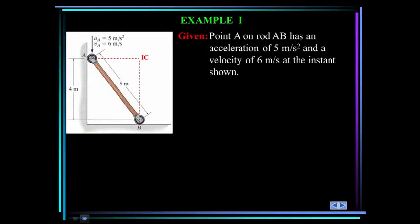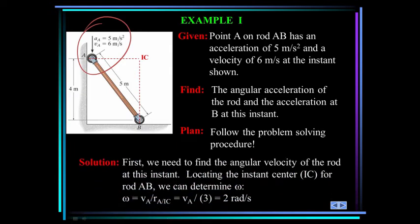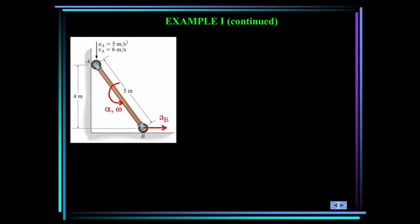Let's look at an example. Point A on rod AB has an acceleration of 5 meters per second squared and a velocity of 6 meters per second at the instant shown. Find the angular acceleration of the rod and the acceleration of B at this instant. Our plan is to follow the problem-solving procedure. First we need to find the angular velocity of the rod at this instant using the relative velocity equation. We'll locate the instantaneous center of rod AB. Omega is the velocity of A divided by R of A with respect to IC, giving omega equal to 2 radians per second. In this case, both A and B move in straight lines, so there are no normal/tangential components of acceleration. We can write the acceleration of A as minus 5J.